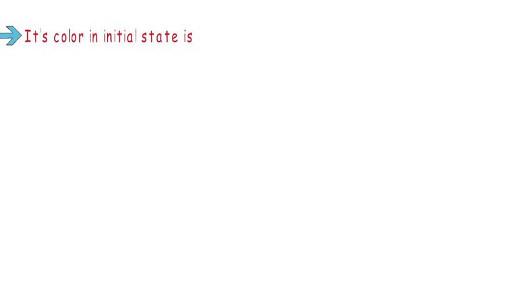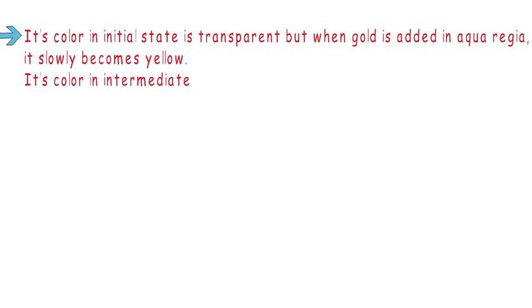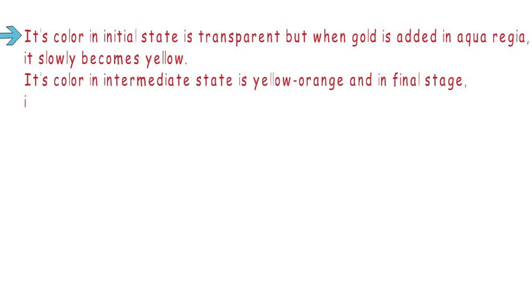Its color in the initial state is transparent, but when gold is added to aqua regia it slowly becomes yellow. In the intermediate state the color is yellow-orange, and in the final stage its color becomes fuming red.